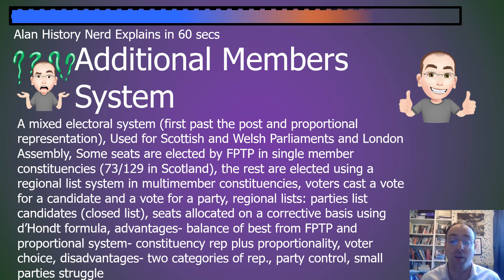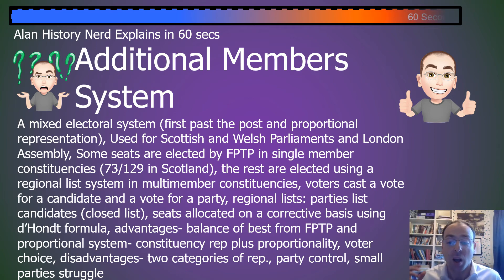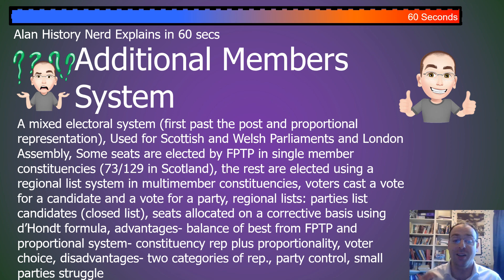The advantages are that it gives a balance of the best from first past the post and the best from proportional systems — constituency representation plus proportionality — and it gives voter choice. The disadvantages are that there are two categories of representation, it is overly controlled by the parties, and small parties tend to struggle.